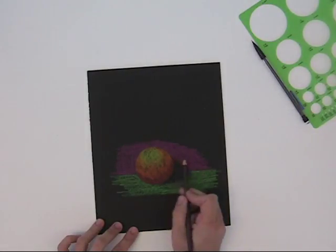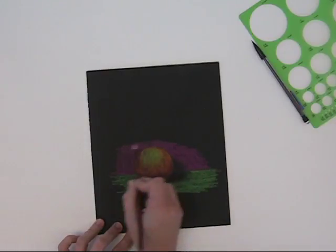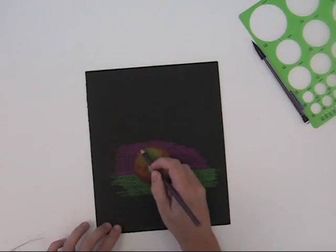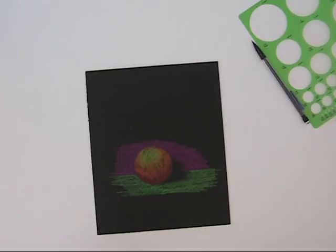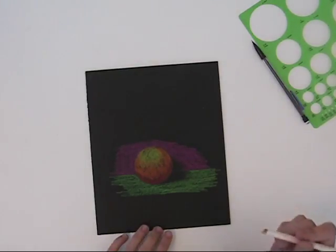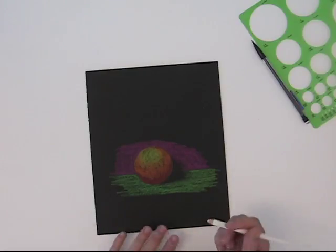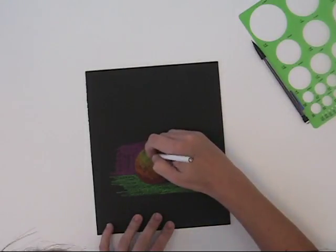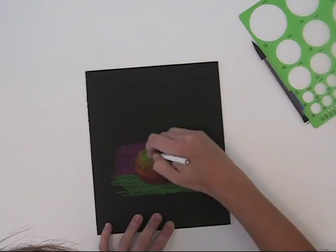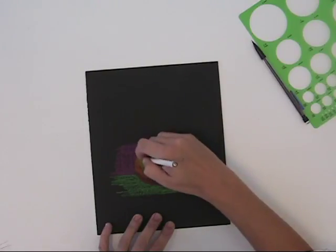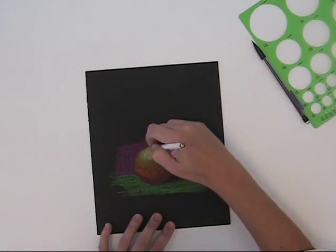And I think that's pretty good - that's reverse grisaille. Now I'd like to show you burnishing. Burnishing is a technique where we're going to use a white colored pencil to blend our colors together, and I think you'll see that it ends up looking more like paint than like colored pencil. Now of course, adding white is going to make it lighter.